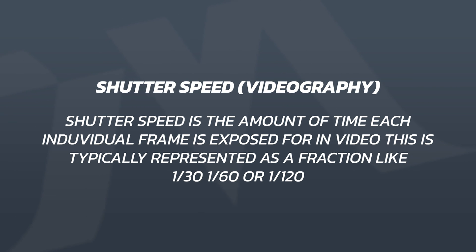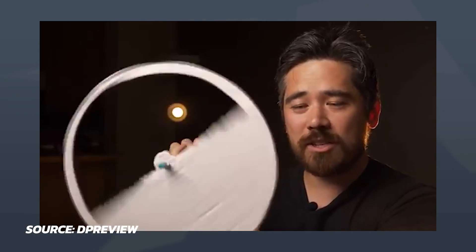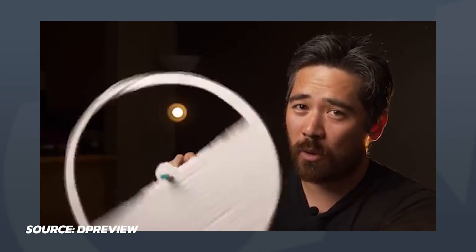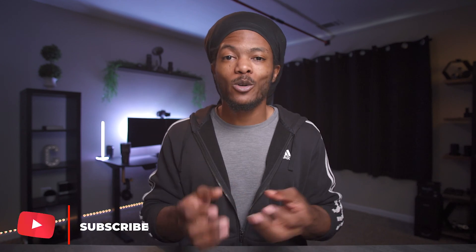In video, the shutter is the amount of time each individual frame is exposed for, and it's typically measured in fractions of a second — for example, 1/48, 1/60, and 1/120. That fractional notation is common in mirrorless and DSLR cameras. In film and motion picture cameras, a rotary disc is used and shutter is indicated as shutter angle. The guys over at DP Review have a great in-depth video on the differences between shutter speed and shutter angle, linked in the description below.